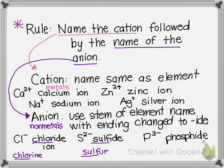So let's look at the rule again. It just says name the cation followed by the name of the anion. So what we're going to do is we're going to name the metal and it will be followed by the name of the non-metal with the ending changed to I-D-E or I-D-E. So I have several examples so we can see it for understanding.